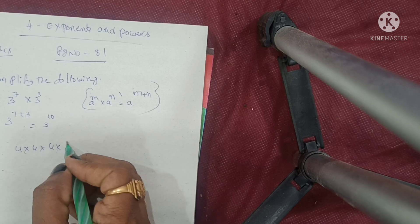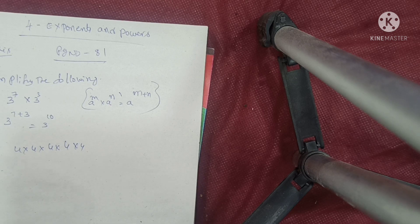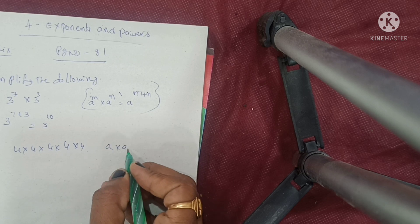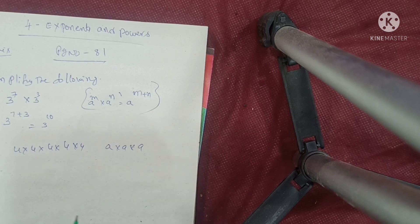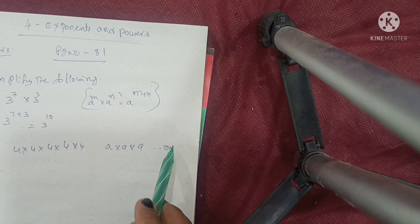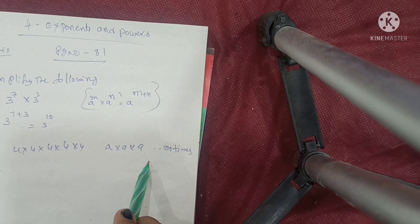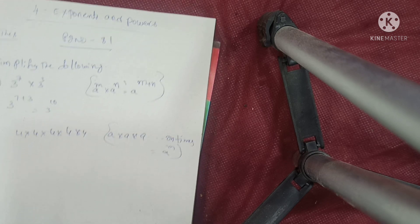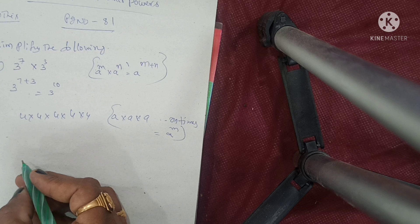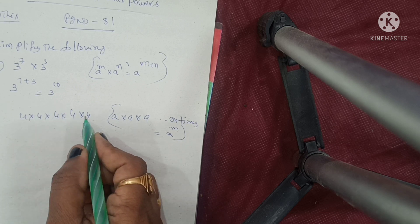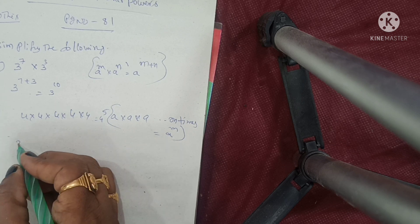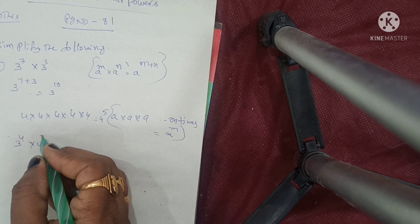Next: 4 into 4 into 4 into 4 into 4 — how many 4s? 1, 2, 3, 4, 5. Using the formula a × a × a up to m times equals a^m, substituting here: that is 4 power of 5. Simple. Next one: 3 power of 4 into 4 power of 3.